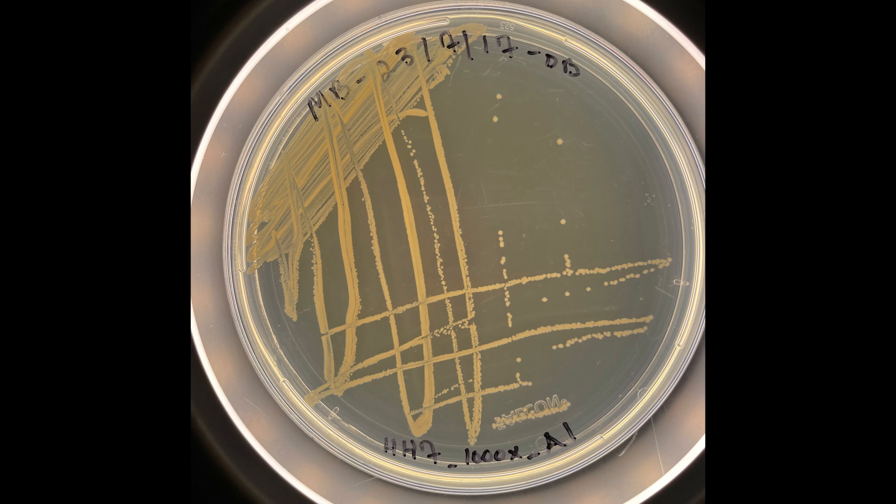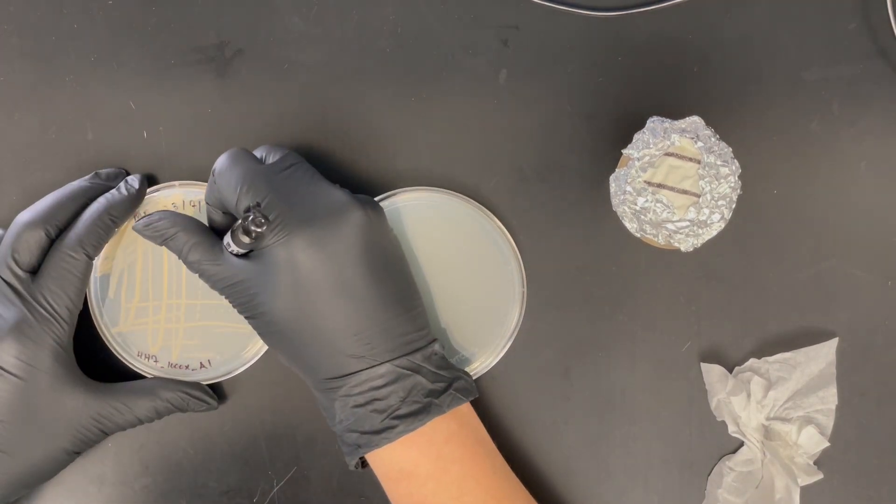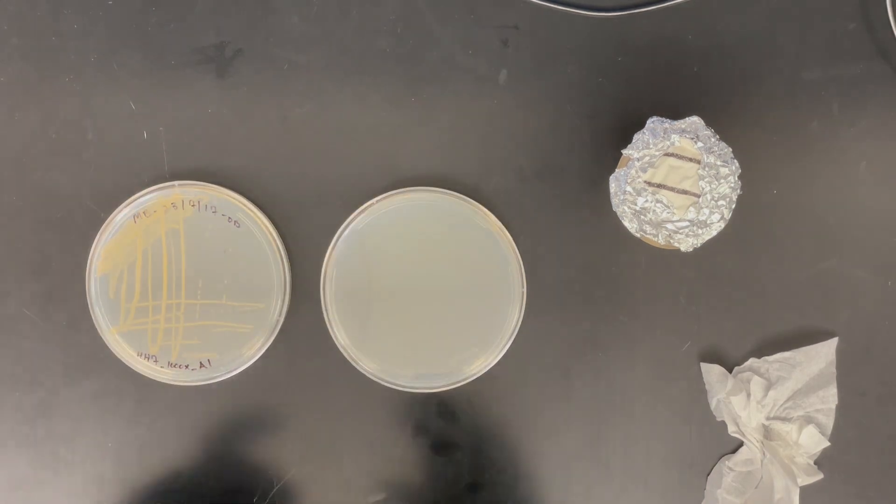What we're going to pick from here are some of those isolated colonies on the upper right-hand side. We're going to take those and transfer them over onto a new plate. We're going to label the plate. This new plate is going to have the same information as you see on this plate, except the date is going to be updated.